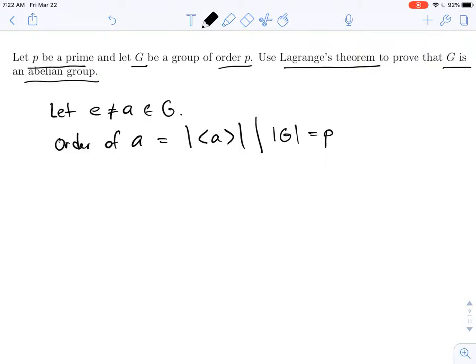But p is a prime number, so this subgroup is either order 1 or order p. If it was order 1, that would mean there's only one power of a, which would be e. But we know that a is not equal to e, so the size of this subgroup has to be p.